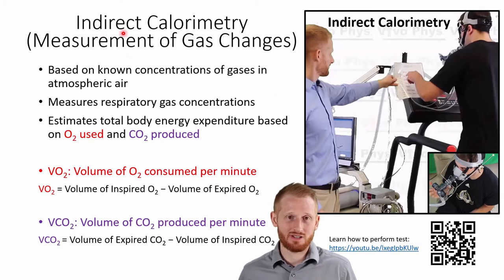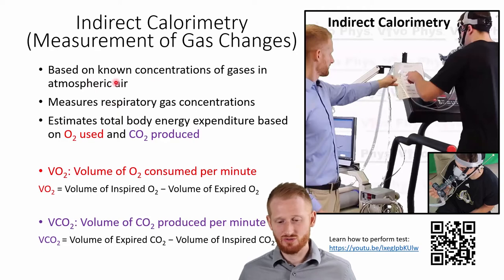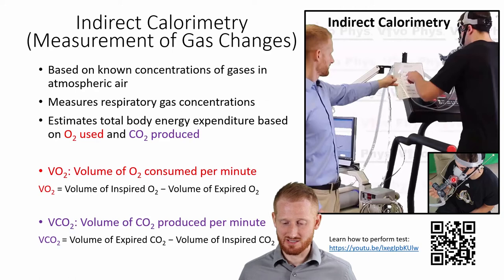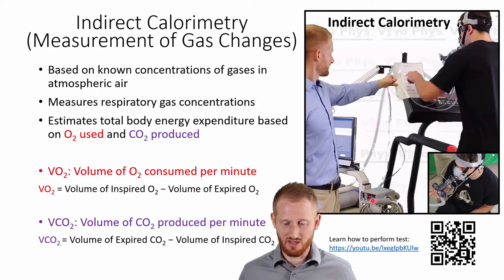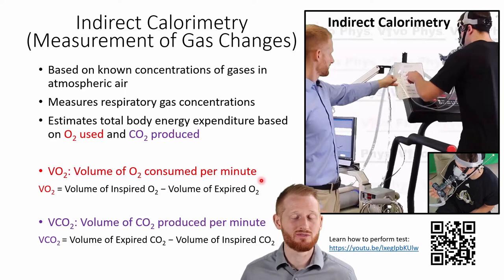Instead of direct calorimetry, we use what's called indirect calorimetry, where we're not measuring body heat anymore — instead we measure gas changes. This uses equipment with a face mask or mouthpiece that collects all the air coming out of the person, sends it through a tube to a metabolic cart, where it's analyzed to determine how much oxygen and CO2 are present.